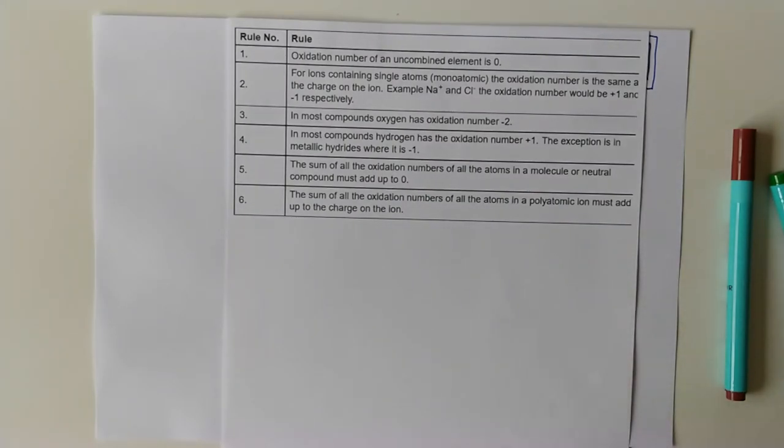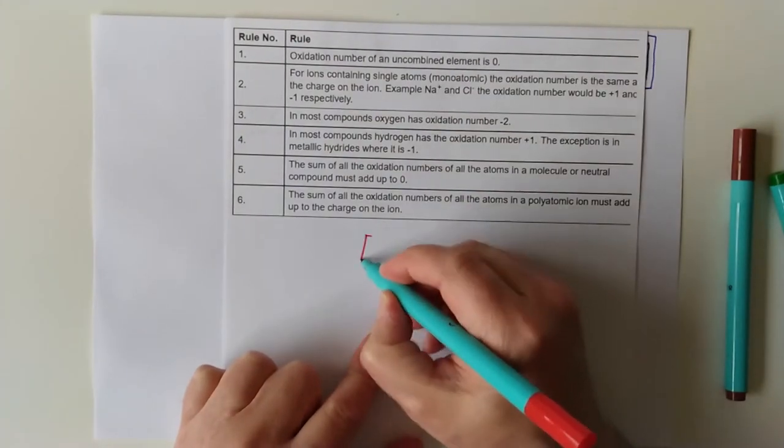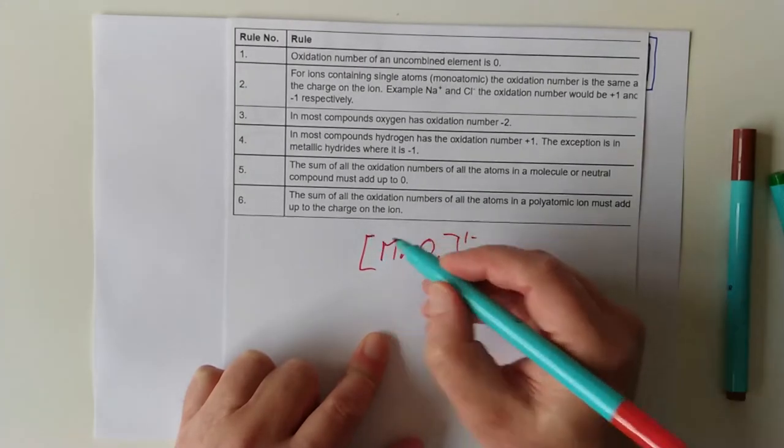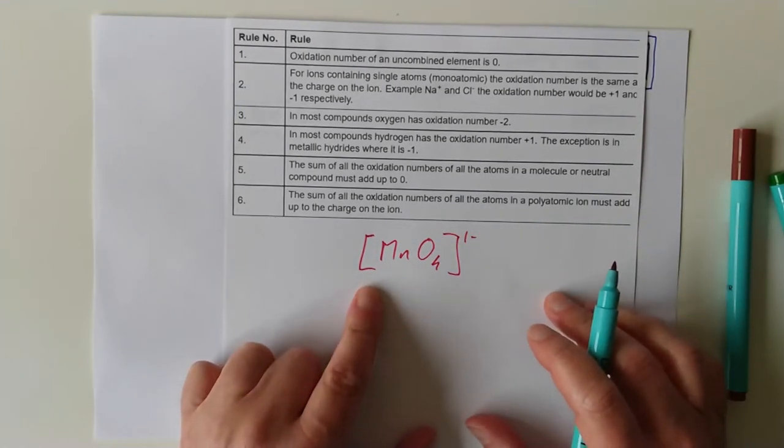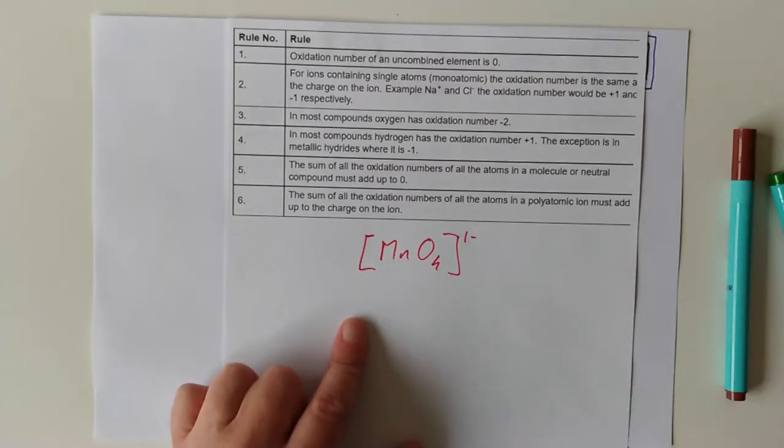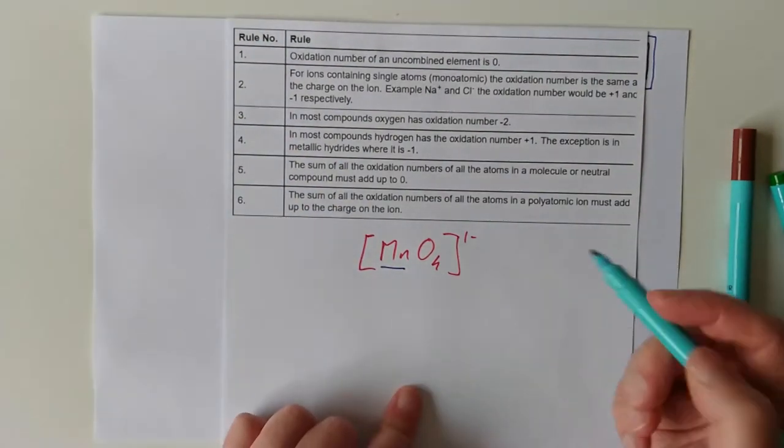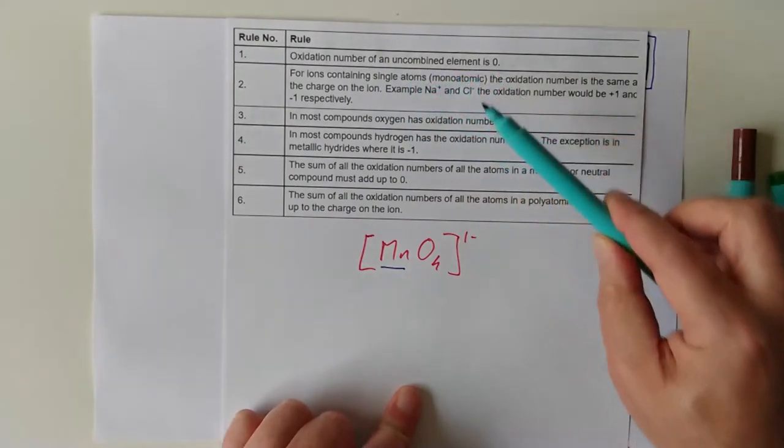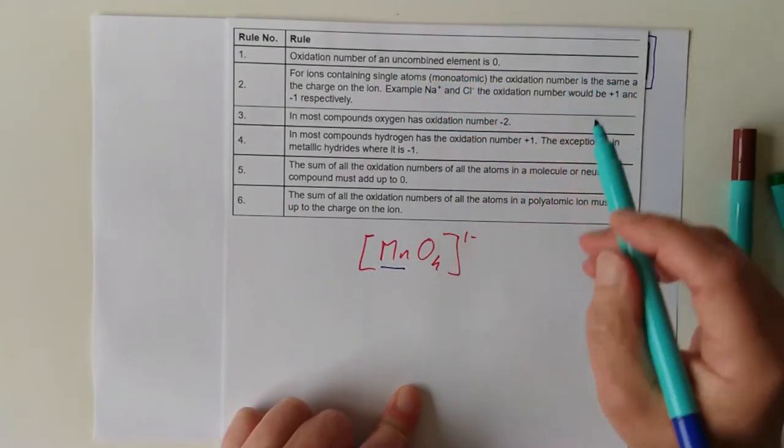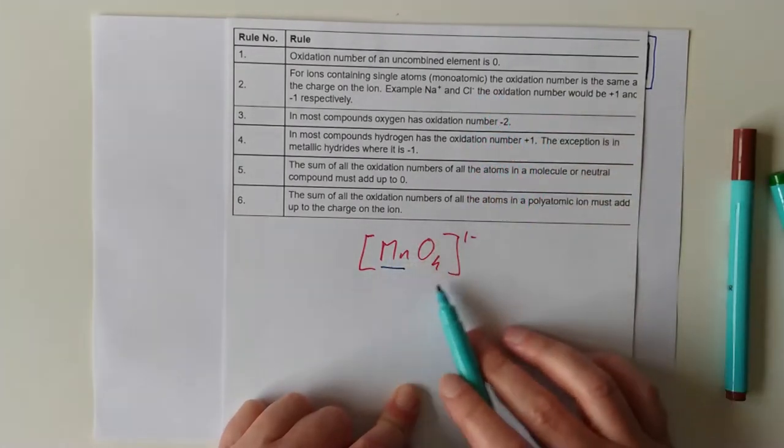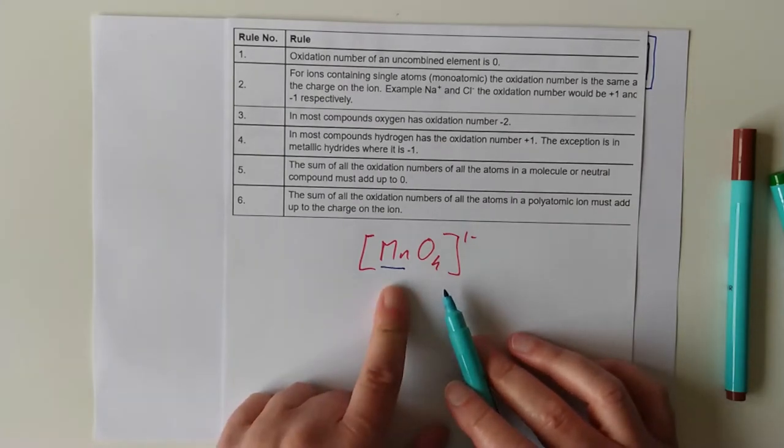For example, let's say we have got this ion here: MnO4 1-. So beloved of me in class because I get to play air guitar to Deep Purple, of course. Now, the question is, what's the oxidation number of the manganese? Well, if we apply these rules here, oxidation number of an uncombined element is zero. I don't see any uncombined elements there, so we can forget that one. For charges containing single atoms, that's monatomics, that's the sodium chloride I just showed you. This isn't. This is much more complex. In fact, if you've been with me further down the school, I call these complex ions.